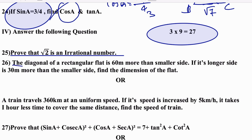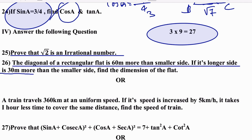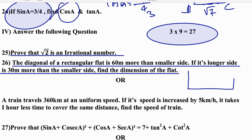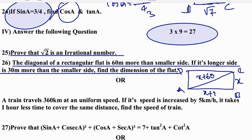Next problem: the diagonal of a rectangle is 60 metres more than the smaller side. Let the smaller side be x, so the diagonal is x + 60 and the longer side is x + 30. Using Pythagoras, we can find the dimensions.